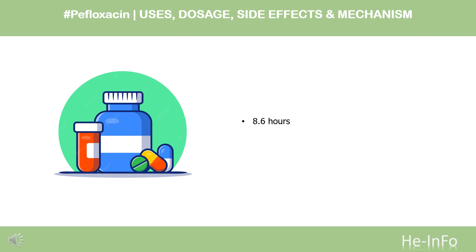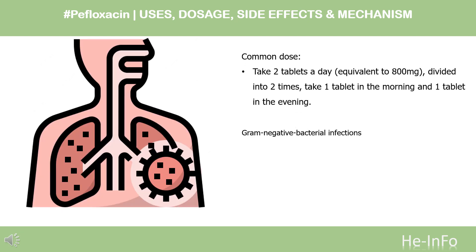Half-life: 8.6 hours. Dose: Take two tablets a day, equivalent to 800 mg, divided into two times — take one tablet in the morning and one tablet in the evening. In the first dose, to quickly achieve an effective blood concentration of the drug, a loading dose of 800 mg, equivalent to two Pafloxacin tablets, can be used.